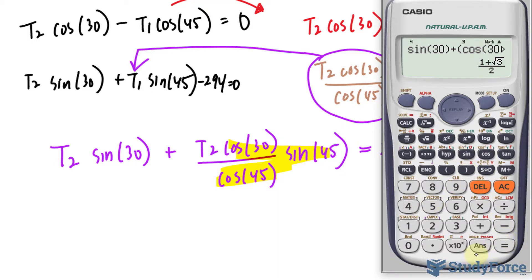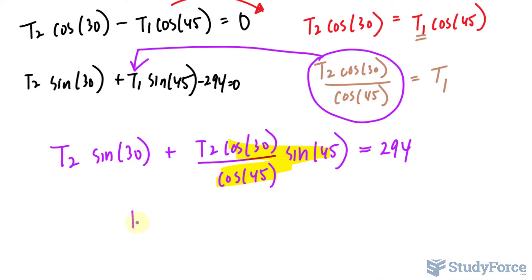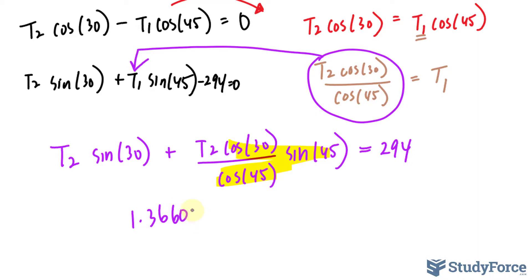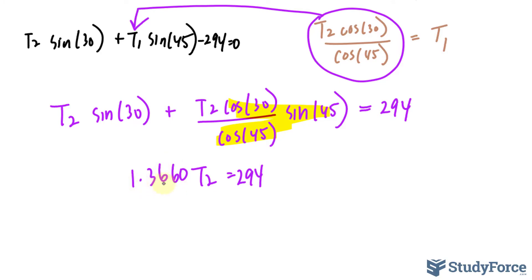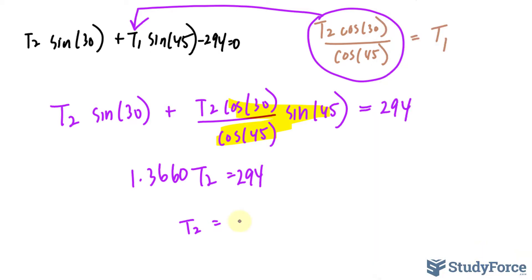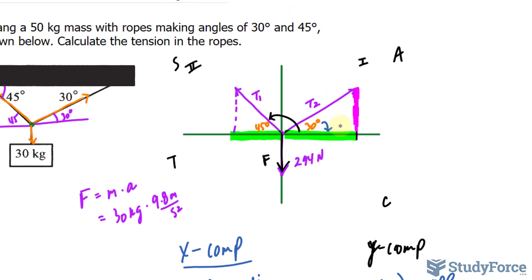And we end up with this value: 1.366, let's carry some more decimals, 60. T2 is equal to 294. We divide both sides by what we found earlier. So 294 divided by what I just found, and I get 215 newtons. So that's the tension of this vector.